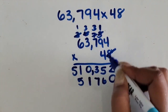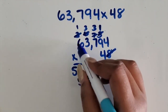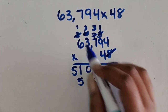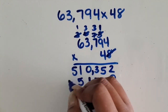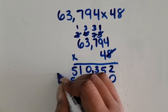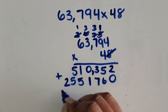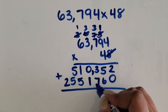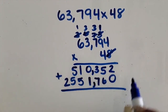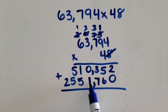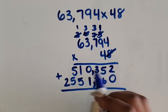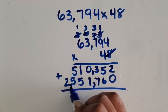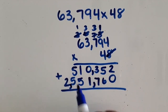Regroup the 1. 4 times 6 is 24 plus 1 is 25. So now we're going to add those separate products together. We'll put my comma between the thousands and the hundreds and between the millions and the 100,000.